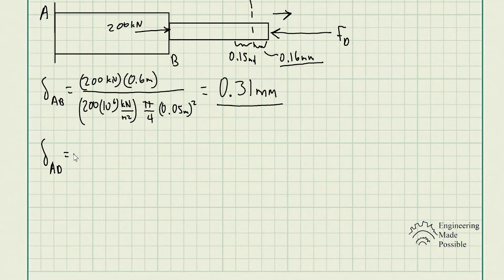Now we have the total deformation of the entire rod assembly. Keep in mind this rod assembly is composed of two different segments. They're both made of the same material. However, the dimensions are in fact different. In this case, the total deformation of the rod assembly is from point A to point D.